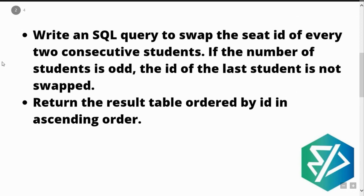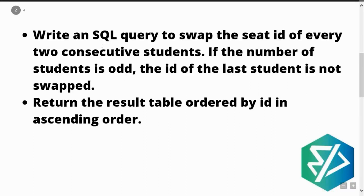So this is the question: write an SQL query to swap the seat ID of every two consecutive students. If the number of students is odd and the ID is of the last student, then the ID is not swapped. Return the result table ordered by ID in ascending order. You have been given two columns — ID and student name — wherein you need to swap the seat ID of every two consecutive students.